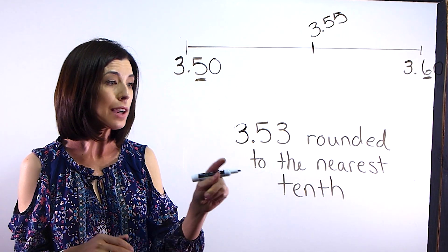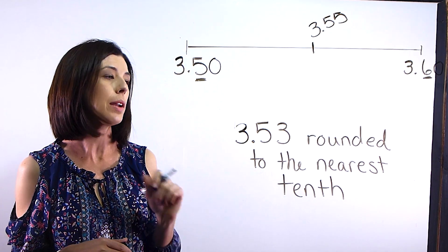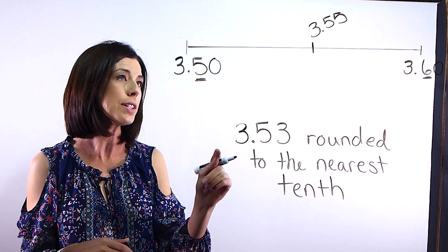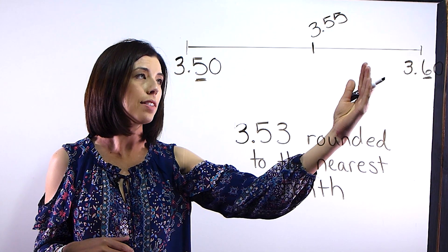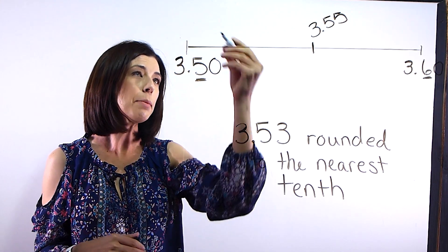Now the next thing we need to do is actually plot our decimal on the number line. So we have 3 and 53 hundredths. And we need to decide is it going to go on the left hand side of the number line or the right hand side of the number line.